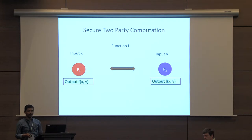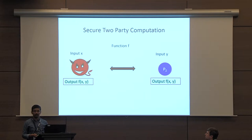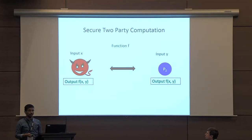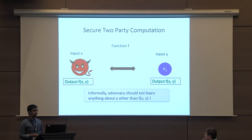Intuitively, what is the security guarantee we want from such a protocol? Let's say there is an adversary that corrupts the first party P1. We want to say that the adversary does not learn anything at all about the other input Y, apart from whatever it could have deduced just from the function output.